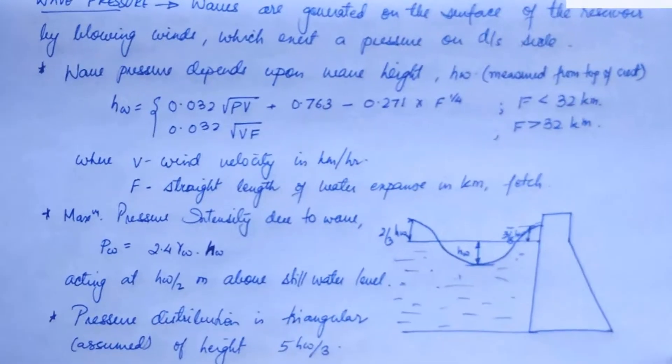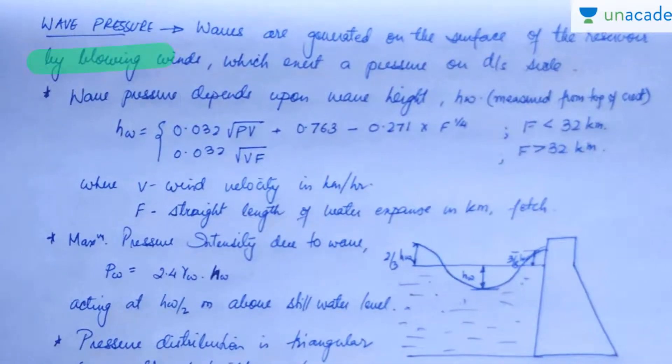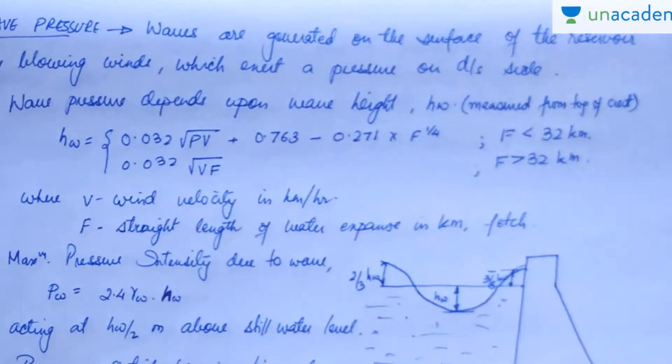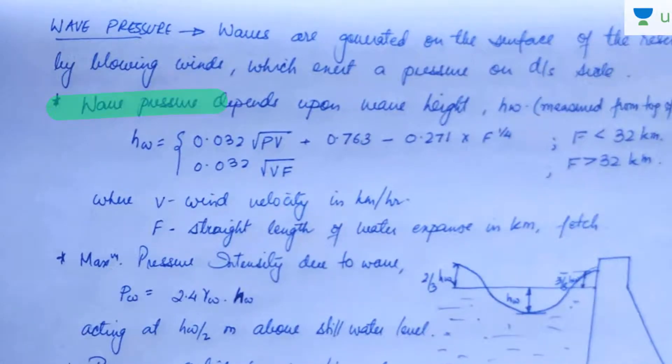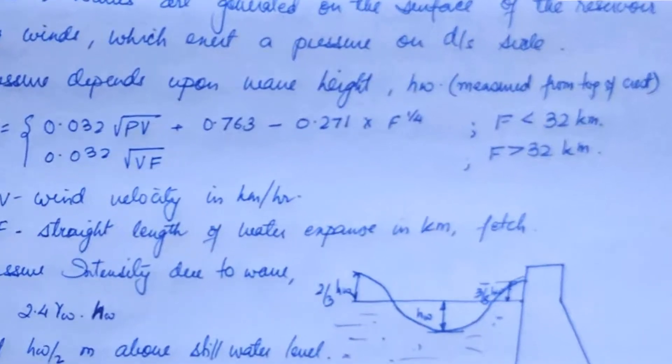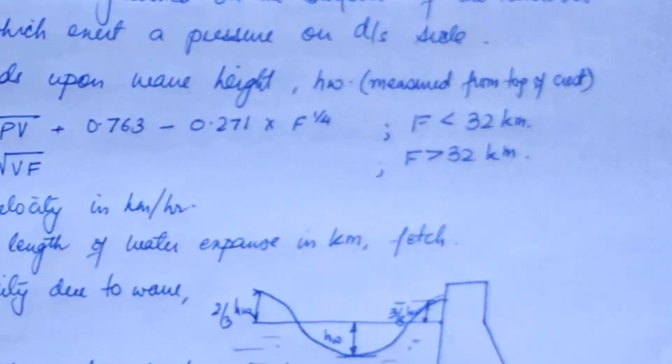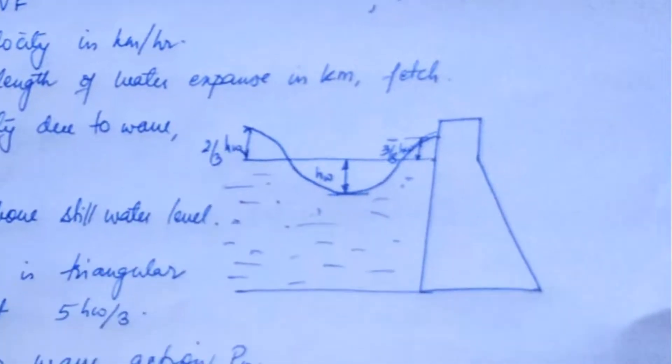Now let's see the wave pressure. Waves are generated on the surface of the reservoir by blowing winds which exert a pressure on the downstream side. Wave pressure depends upon the wave height and it is measured from top of the crest, hw.